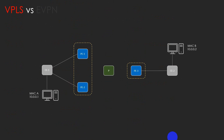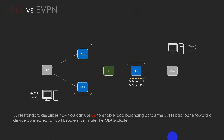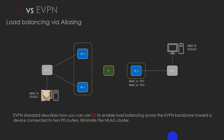VPLS cannot do load balancing because it does not support aliasing. When a PE wants to forward a packet by looking at the destination MAC address, it sends only to one PE from which it learned. Whereas in EVPN, the standard describes how we can use an ESI — Ethernet Segment Identifier — to enable load balancing across the EVPN network. With the concept of aliasing in EVPN, we can achieve load balancing.